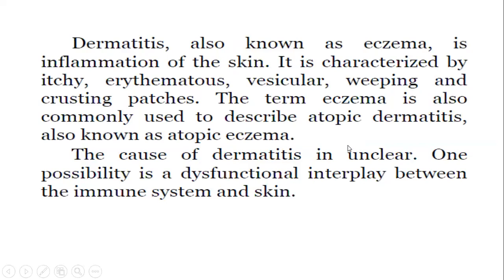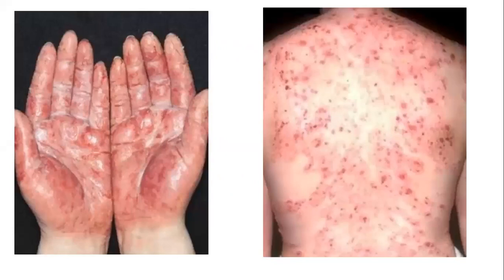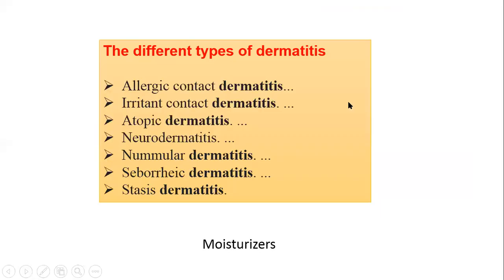The symptoms and signs of dermatitis include intense itching, skin lesions such as red bumps, and blisters may develop. Scars may form over the affected area. The different types of dermatitis include: allergic dermatitis, irritant dermatitis, atopic dermatitis, neurodermatitis, nummular dermatitis, seborrheic dermatitis, and stasis dermatitis.